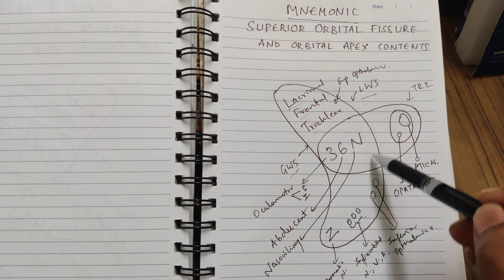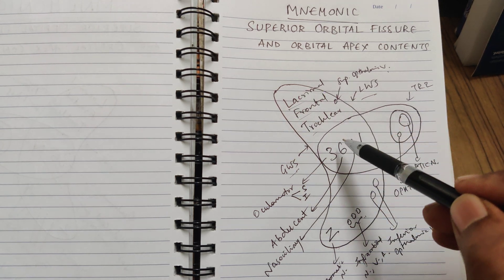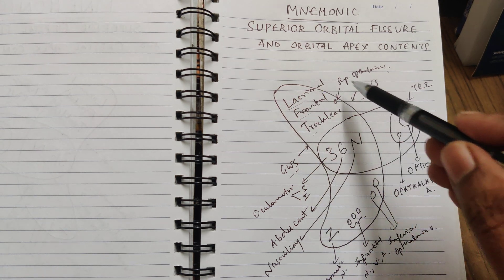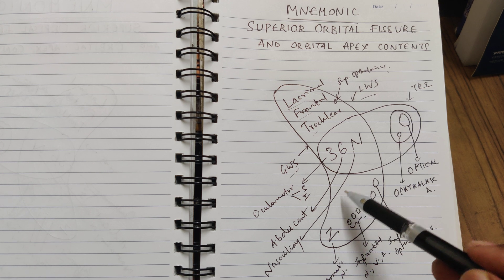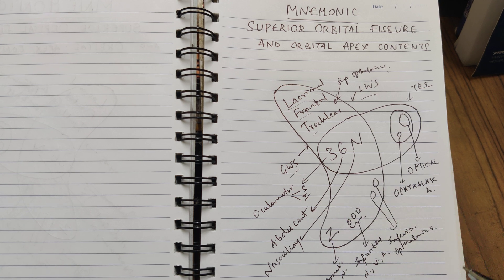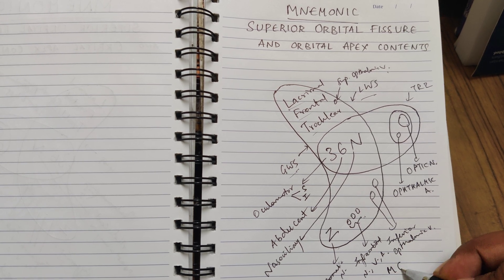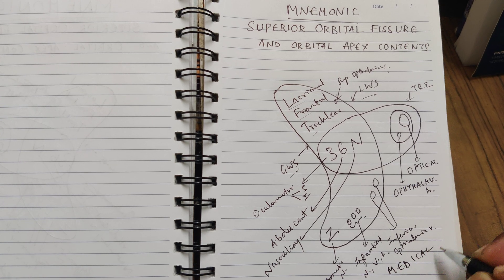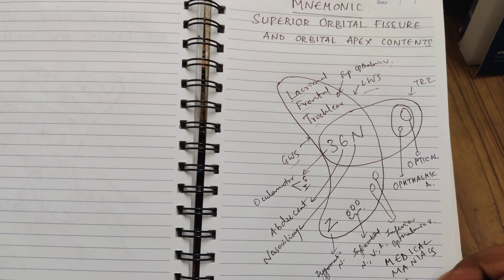So there are 7 structures that are part of the superior orbital fissure, and 5 structures are part of the inferior orbital fissure. Thank you — if you like the video, please like, comment, and subscribe to the Medical Maniacs YouTube channel to not miss our videos.